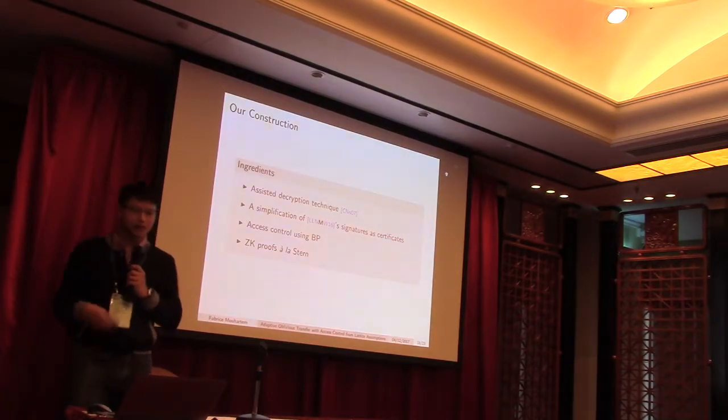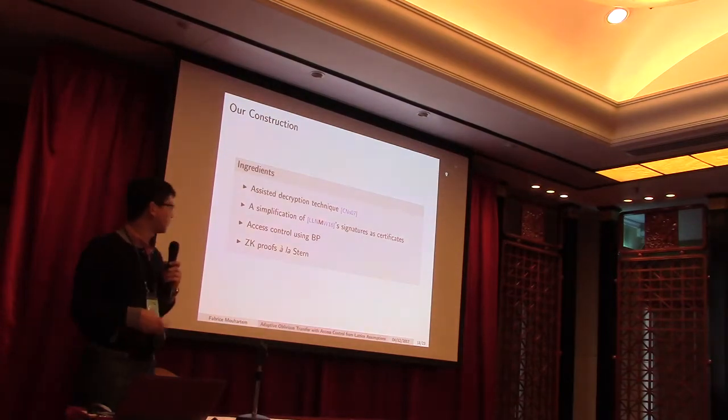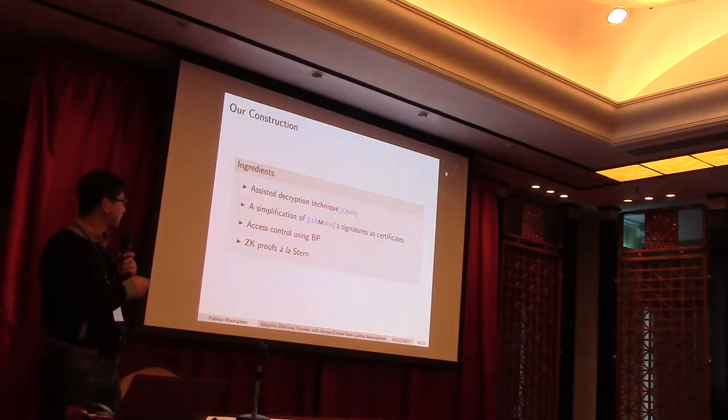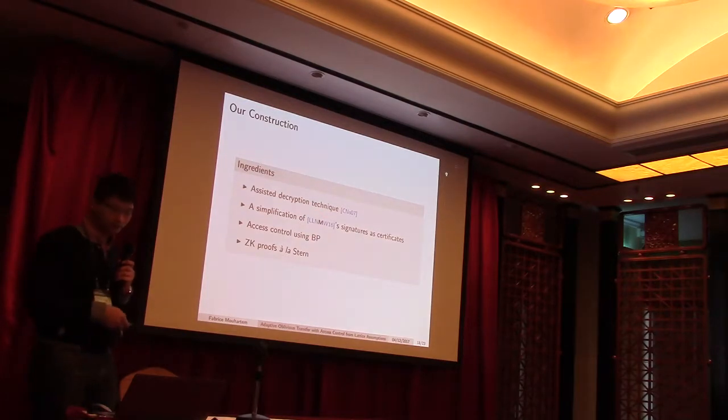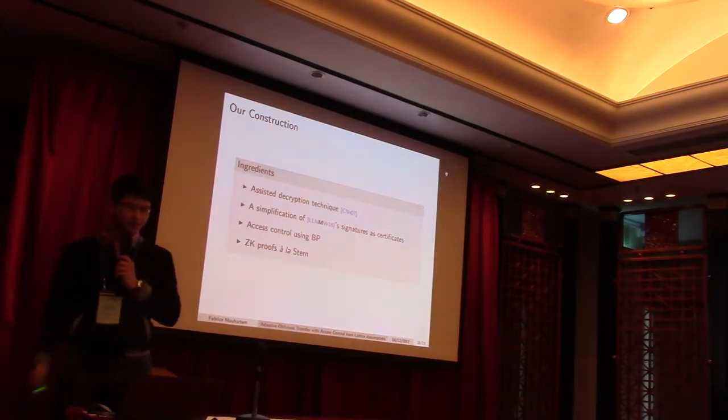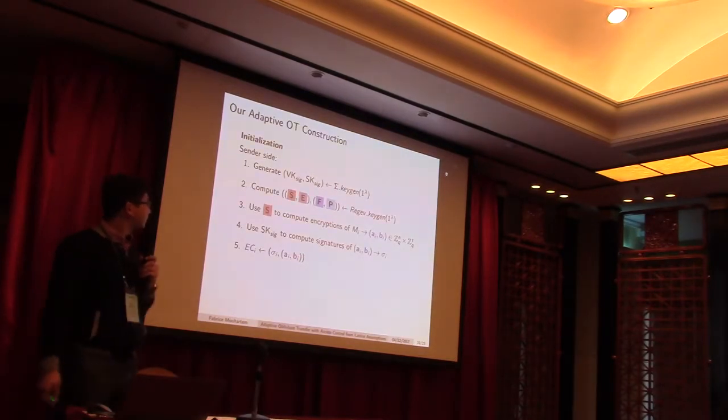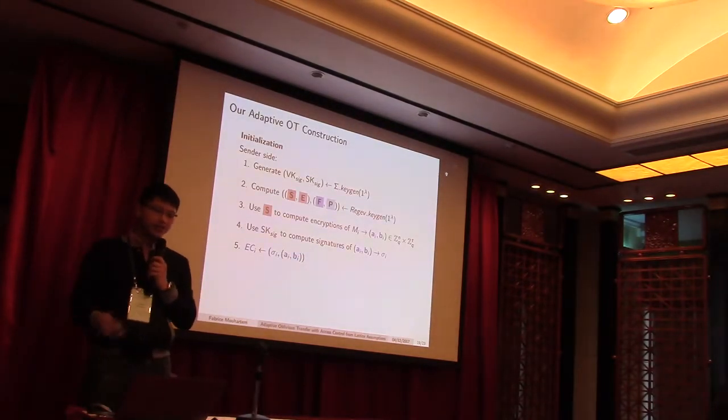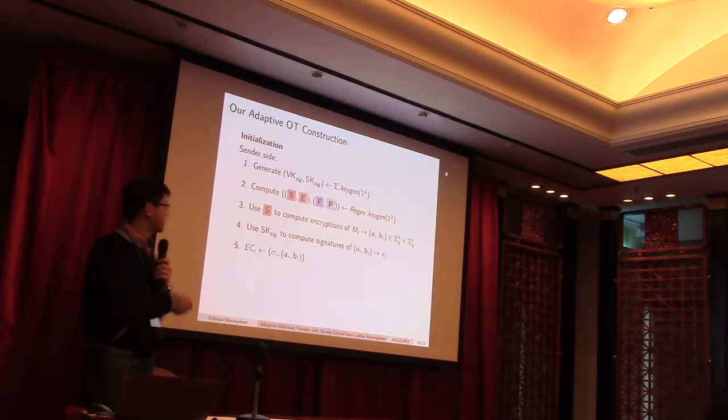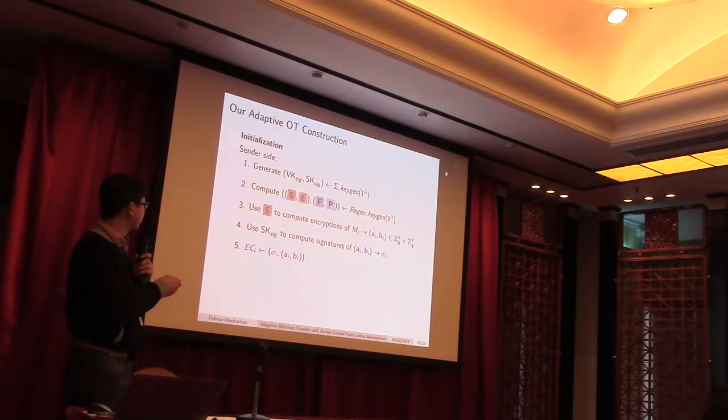So, now, let us go into our construction, which basically uses everything I presented earlier. So, some techniques from assisted decryption. We handle access control using a branching program, and we use zero-knowledge proofs in the construction. So, first of all, in the initialization phase, we have everything I presented, like the signature scheme with companion protocols here.